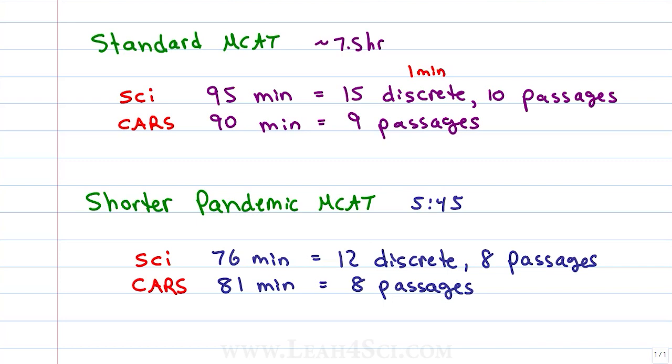In the previous video, we allocated 1 minute per discrete question, 8 minutes per science passage, and 10 minutes per CARS passage. We'll apply the same logic to the shorter MCAT with 1 minute per discrete question, 8 minutes per science passage, and just over 10 minutes for the CARS passages.